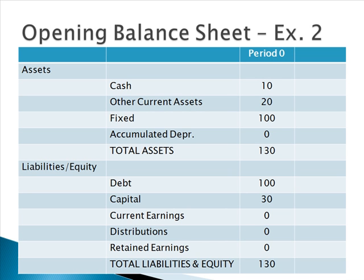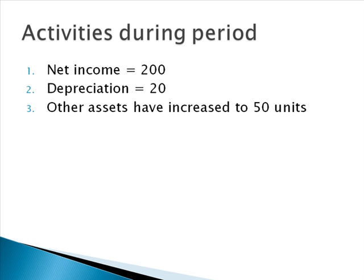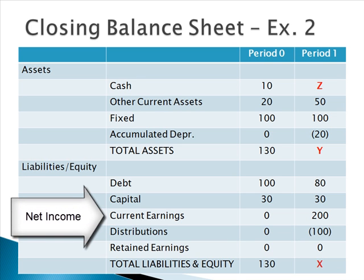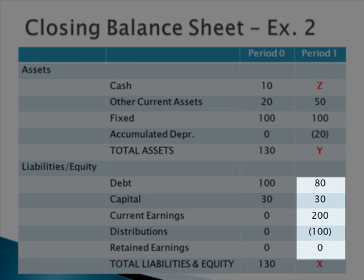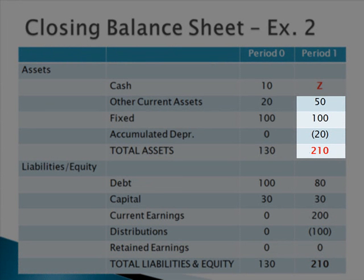Let's look at a second example. We've changed the numbers slightly, but no real structural changes. The activities that occurred during the period are: net income of 200, coming from the income statement; depreciation of 20; other assets have increased to 50 units; and the debt has been paid down by 20 units. Plugging those numbers into our balance sheet to arrive at period 1, we once again do not know the values for X, Y, and Z. X is easily determined by adding together the period 1 liabilities and equity column — we find X is equal to 210. Since X and Y must be equal, we plug 210 into Y, then work backwards to determine Z must equal 80.